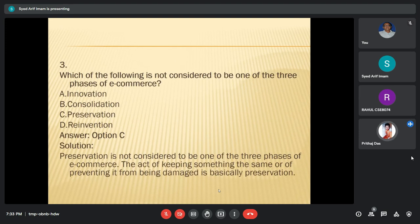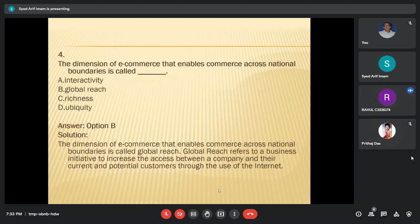This is Rahul. The next question is, the dimension of e-commerce that enables commerce across national boundaries is called what? The correct answer is global reach. Other dimensions are market efficiency and quality, which represent what companies perceive and business aspects where they can derive benefits by adopting e-commerce.